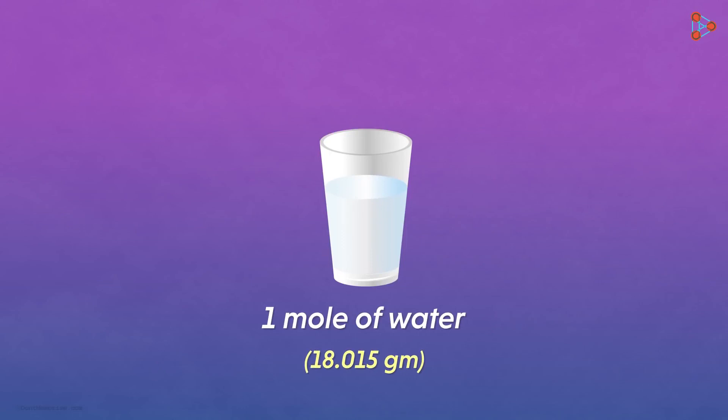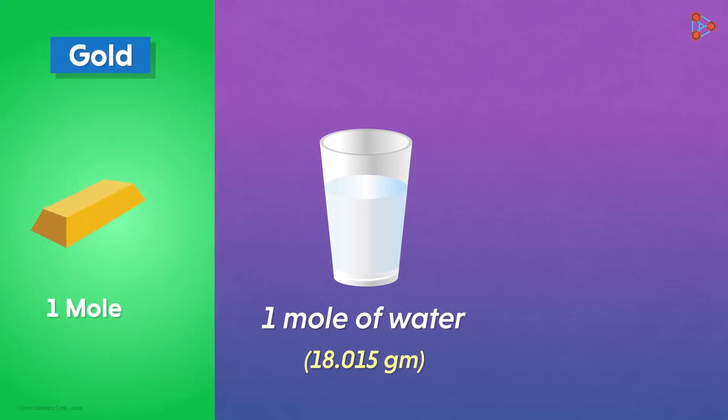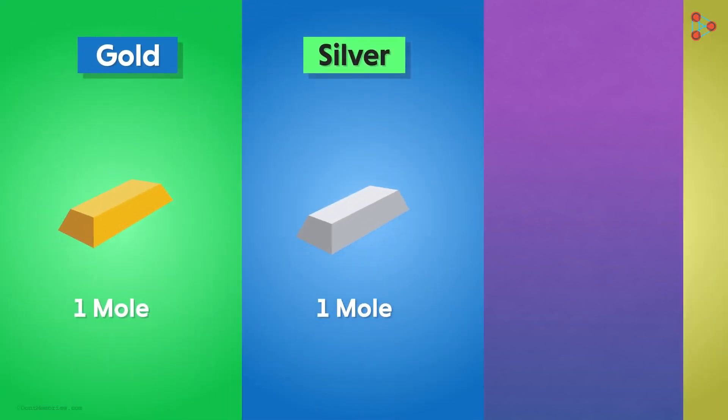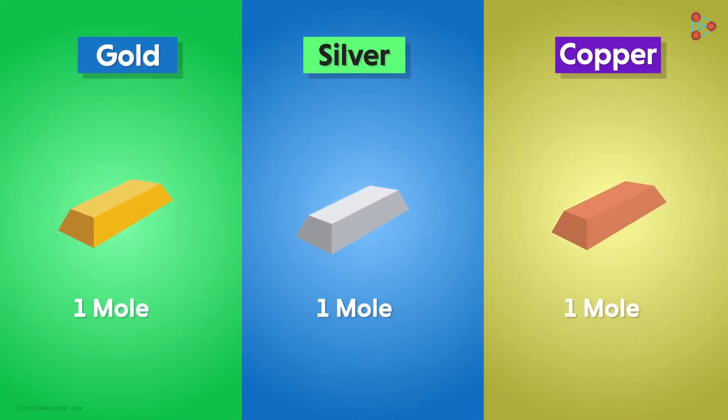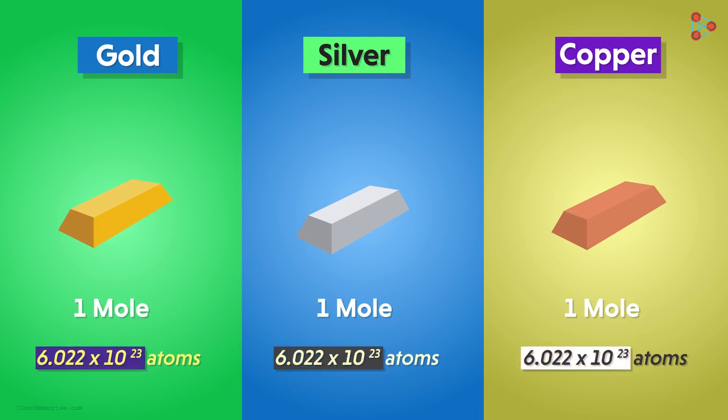For the sake of comparison, if we take one mole of gold, one mole of silver, and one mole of copper, then all of them will have the same number of atoms in them. That is 6.022 times 10 raised to 23 atoms. This number is Avogadro's number.